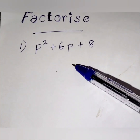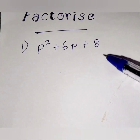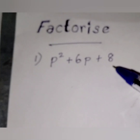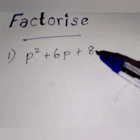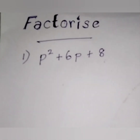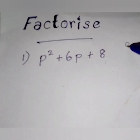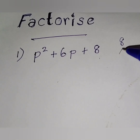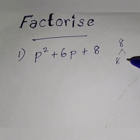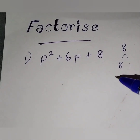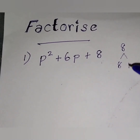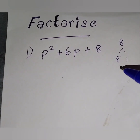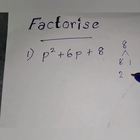P squared plus 6P plus 8. Look at this 8. 8 is a constant and we know how to find the factors for a constant using natural numbers. Now take 8 and find out the factors. What are its factors? 8 ones are 8. If you add or subtract 8 and 1, will you get 6? No. Then let us think of another number.